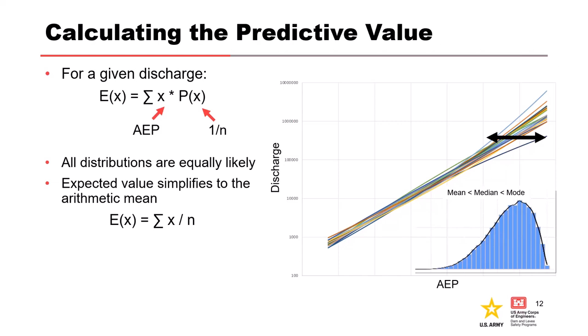Because of this asymmetry, this is why we do this calculation horizontally like that. If we were to take a vertical slice, you would not have the exact same asymmetry that you see here. That's why we calculate an expected value for a given discharge rather than an expected discharge for a given probability.